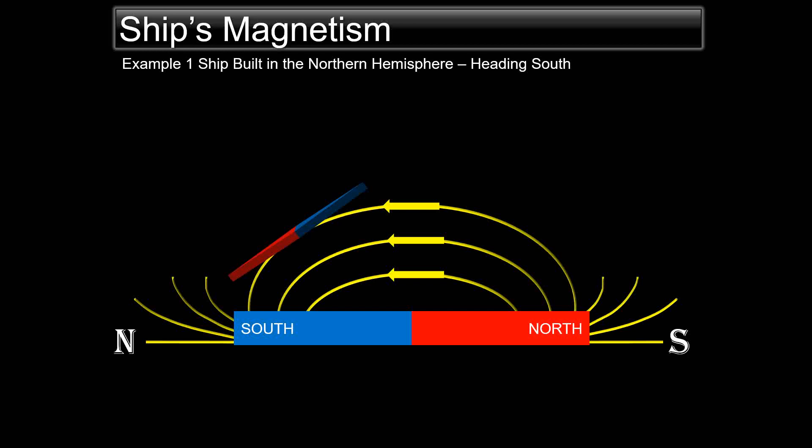A ship built in the northern hemisphere heading south takes up induced magnetism such that her stern becomes the red pole and her bow becomes the blue pole. You can imagine this vessel as consisting of a number of horizontal magnets with blue forward and red aft, and also a number of vertical magnets with blue on top and red below, because the red end dips downward as it is attracted toward the earth's magnetic north pole — this is why the earth's magnet is colour-coded in opposite colours.